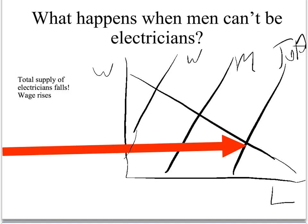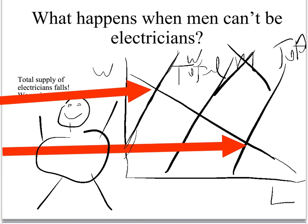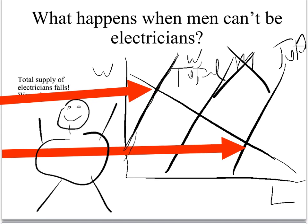So we throw out the men — we cross out men. Only women are going to be electricians. The women's supply curve now becomes the total supply curve for electricians. What happens to the wage? The wage rises to this new level, and this is the number of electricians now — very few electricians compared to before. The wage is much higher because only women are being electricians.